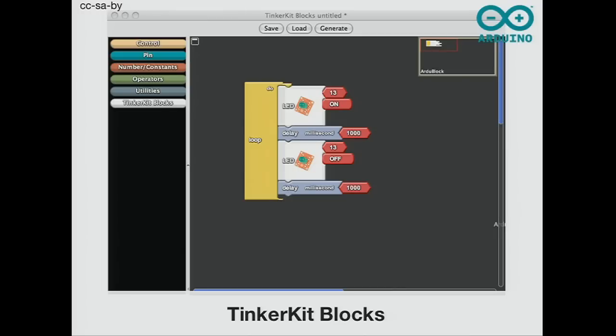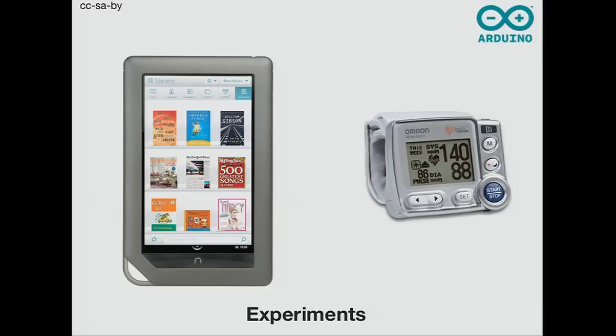I'm going to show you quickly two experiments I'm working on. I'm trying to make something slightly more useful than blinking LEDs — at the moment I'm working on a demo of connecting a blood pressure monitor with a cheap tablet. This is a Nuke, it's only $200. It's an interesting direction: how you can use cheap Android tablets and the ADK in education to run scientific experiments and reuse that platform for multiple uses.